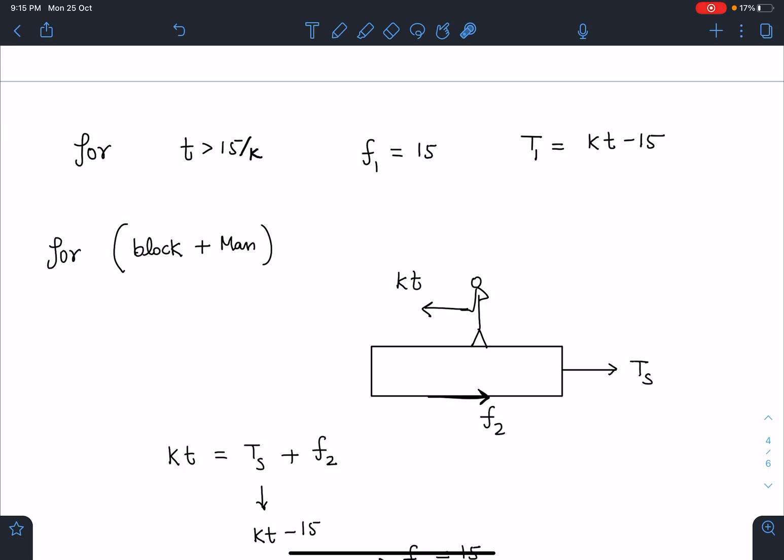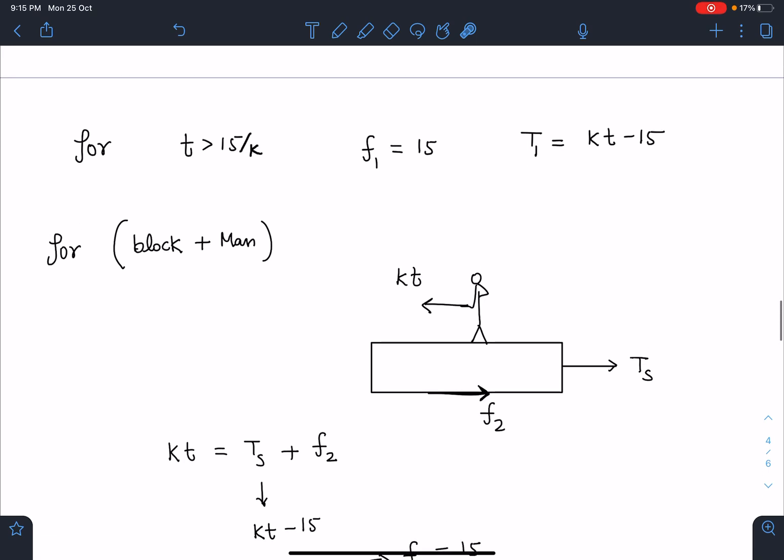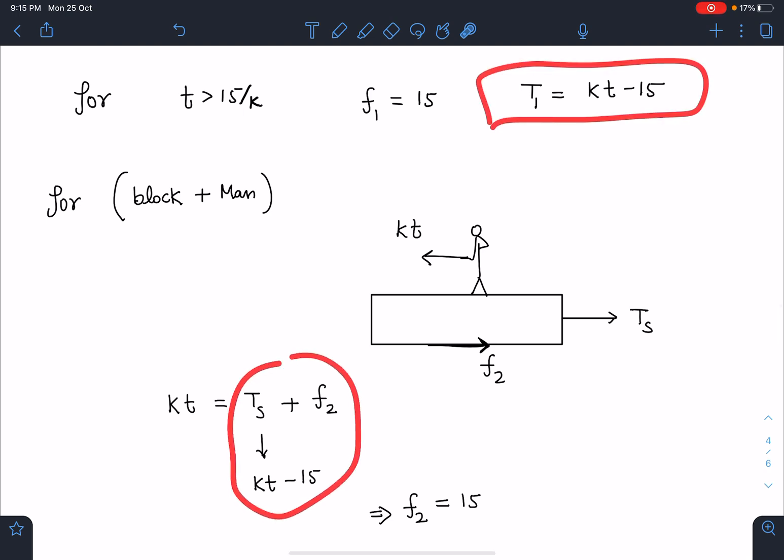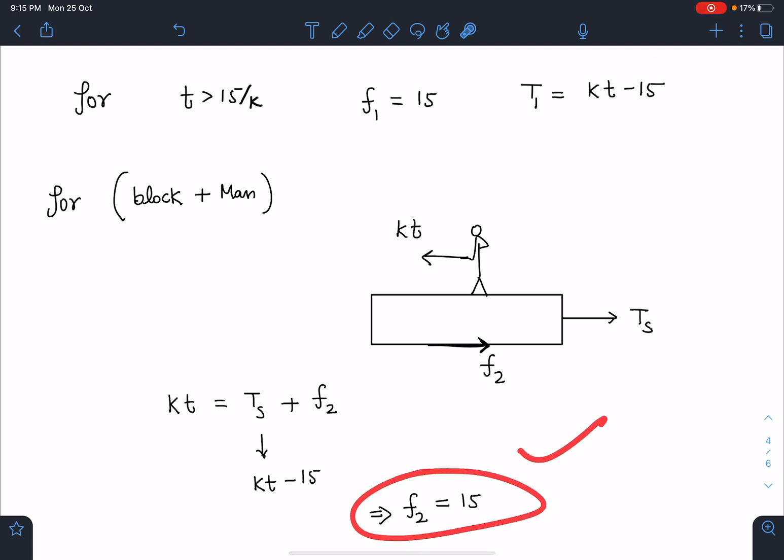But if I substitute the value of tension T, which is kt minus 15, I am going to get F2 is equal to 15.